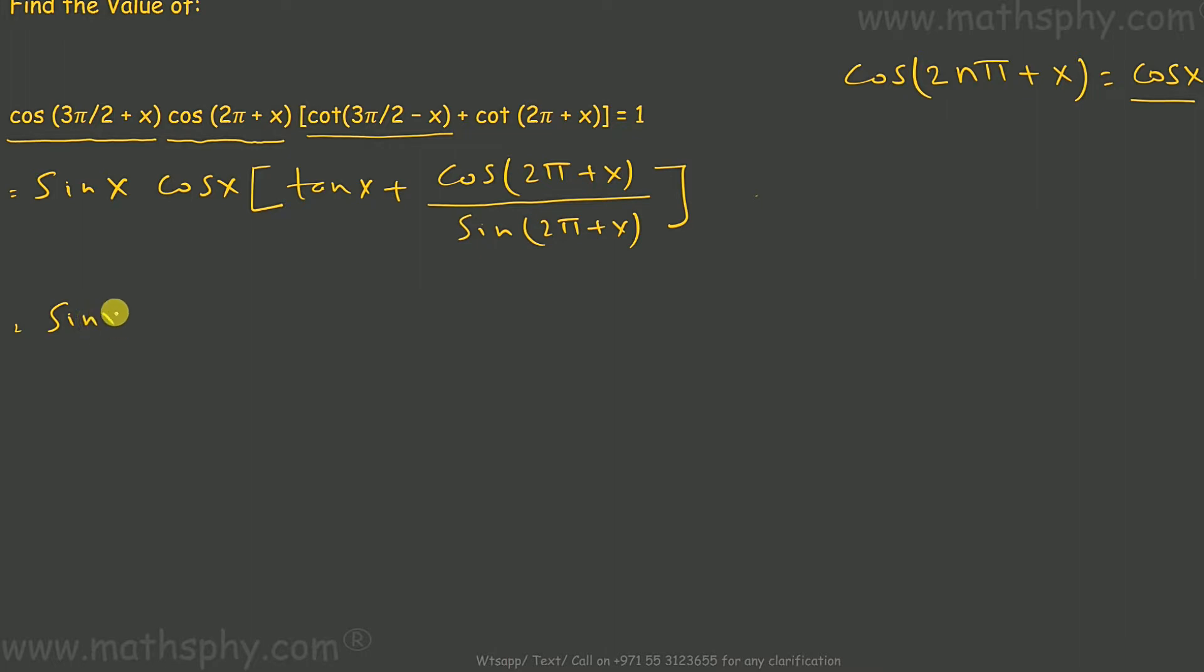So we can say that it is sine x into cos x. This will be tan x. Cos(2π + x) stays as it is cos x. This will be sine x cos x over sine x, which gives you cot x.